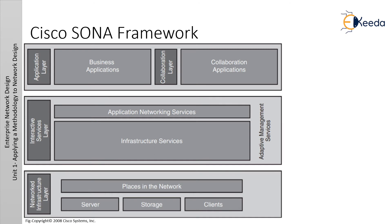The Cisco SONA framework is an architecture that illustrates how to build integrated systems and guide the evolution of enterprises towards more intelligent networks. Using the SONA framework, enterprises can improve flexibility and increase efficiency by optimizing applications, business processes, and resources. It enables IT to have a greater effect on business. The SONA architecture consists of three layers: application layer, integrated service layer, and networking infrastructure layer.